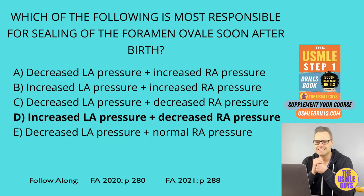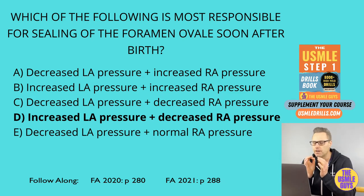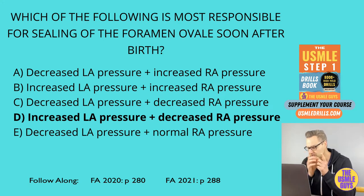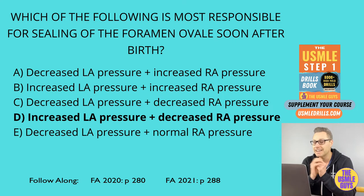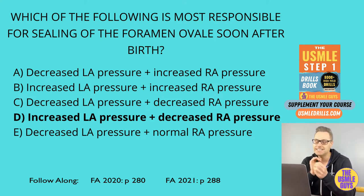The correct answer here is D. One of the most important concepts we need to know about cardiac embryology is the septation of the chambers, and this is a multi-step process. For this specific question, we need to know that the septum primum closes against the septum secundum, thus sealing off the foramen ovale soon after birth. This is done thanks to an increase in left atrial pressure and a decrease in right atrial pressure.